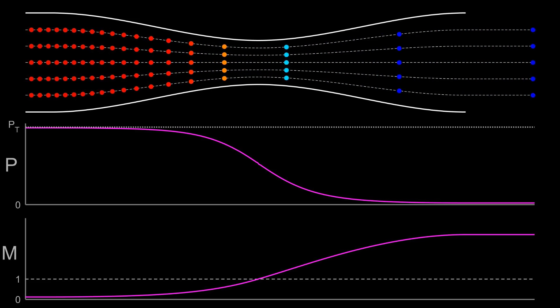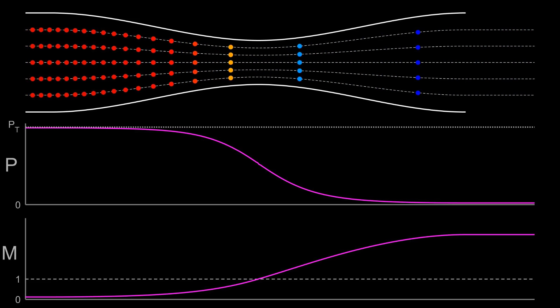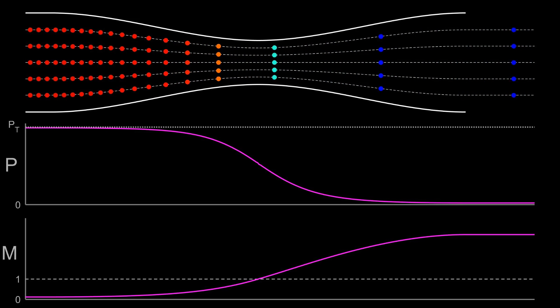However, the gas particles can still easily interact with those particles above and below them, as they're all travelling at roughly the same speed. We can exploit these vertical particle interactions in order to tell the flow what to do. Instead of communicating via pressure gradients and particle collisions, we instead communicate with the flow via the nozzle shape.